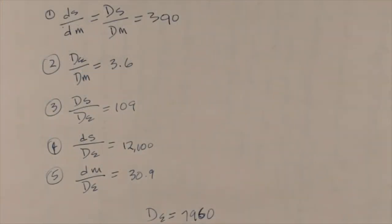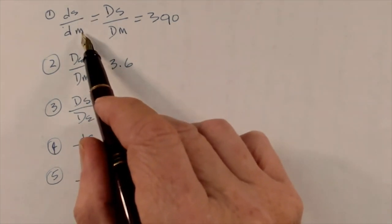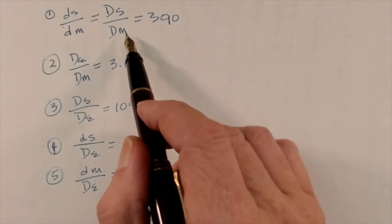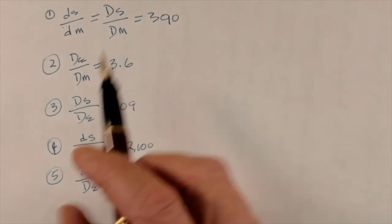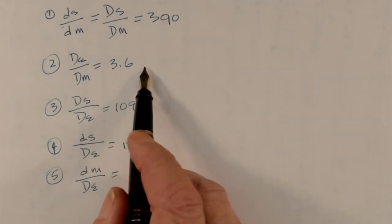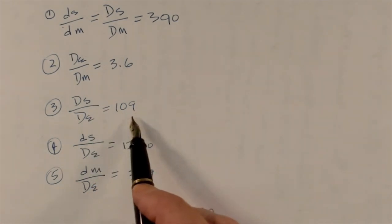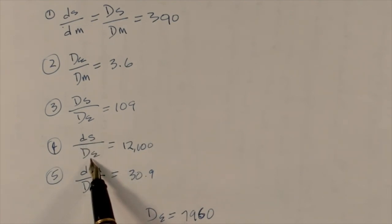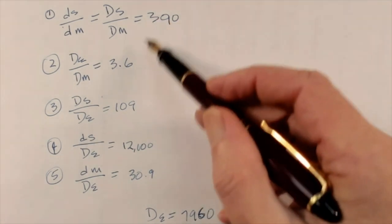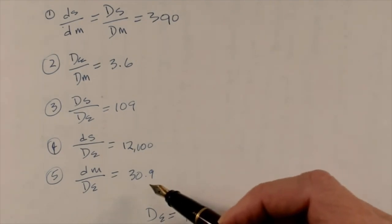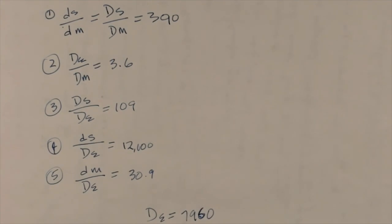Okay, so let's go ahead and go over everything real quick. We have the distance to the sun over the distance to the moon equals the diameter of the sun over the diameter of the moon, and that equals 390. The diameter of the earth over the diameter of the moon, 3.6. The diameter of the sun over the diameter of the earth is 109. The distance to the sun over the diameter of the earth is 12,100. And the distance to the moon over the diameter of the Earth is 30.9. Now, our diameter of the Earth is 7960. The reason I've got 7960 miles is that we're only dealing with about three significant digits on these numbers, and we don't want to put in accuracy that doesn't exist.